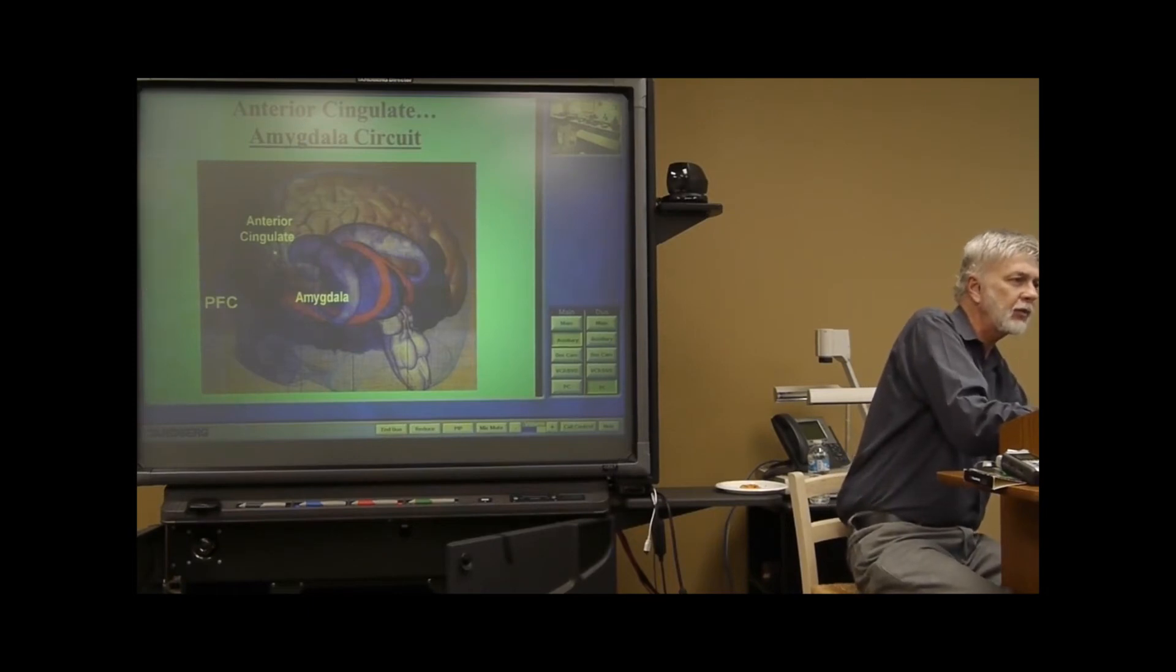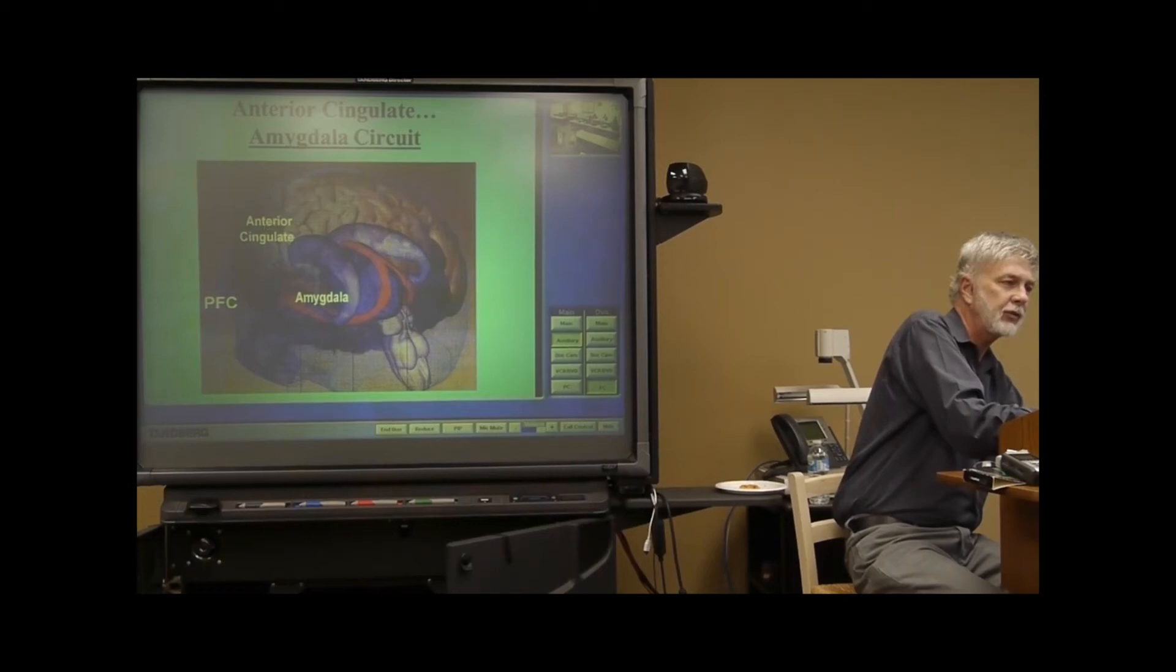Now, I hope you can see this. It may be a little bit hard to see, but here's the anterior cingulate. We're looking at it from a somewhat different angle. PFC is prefrontal cortex, and there's a lot of connection between the PFC and the anterior cingulate.